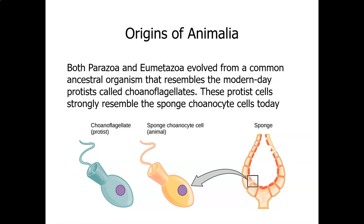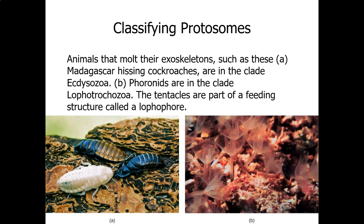Both parazoa and eumetazoa evolved from a common ancestral organism that resembles the modern-day protist called choanoflagellates. It is thought that the choanoflagellates are related to the ancestor of the first sponge. And the reason for that is because here's a choanoflagellate, which is a single organism, a single protozoan, has a flagella, and this is a choanocyte, which is a cell found in the lining of the inside of the sponge. And it helps it to filter food.